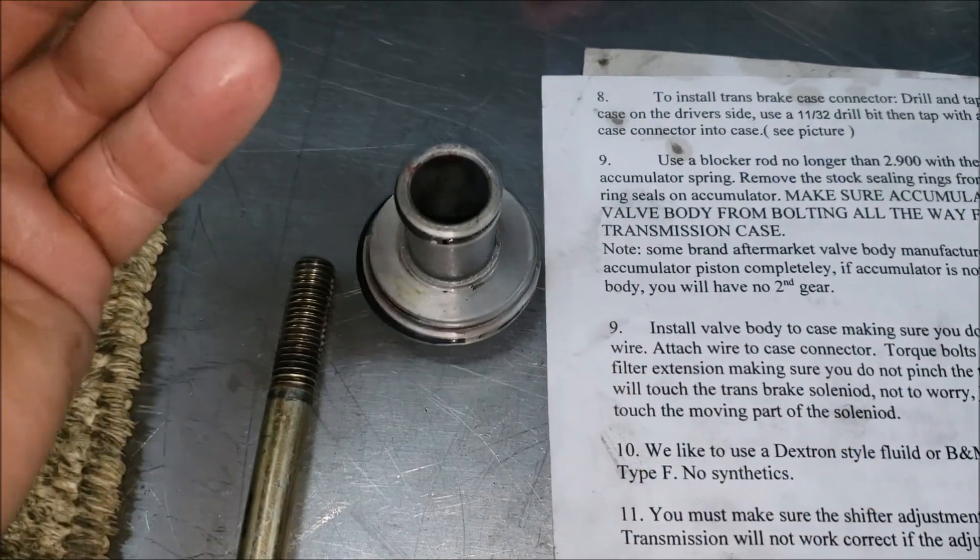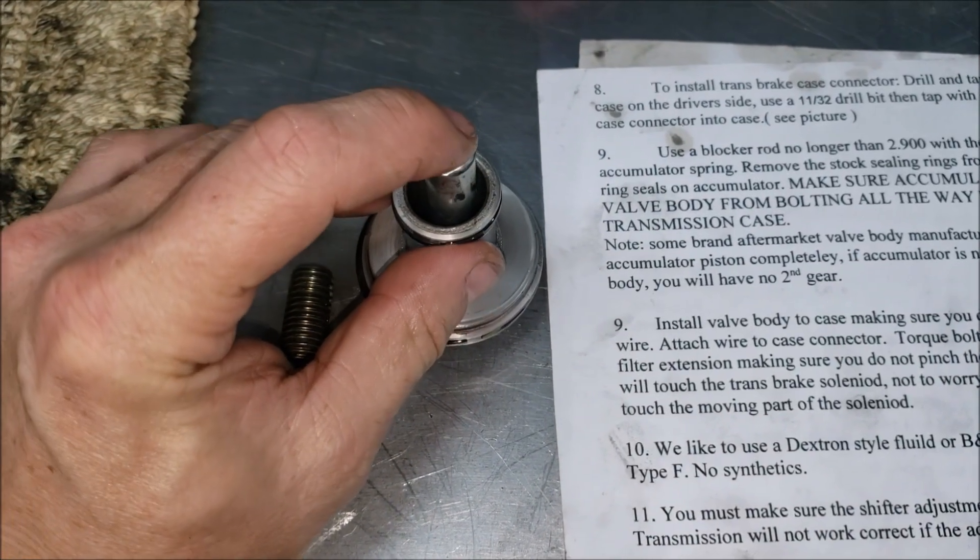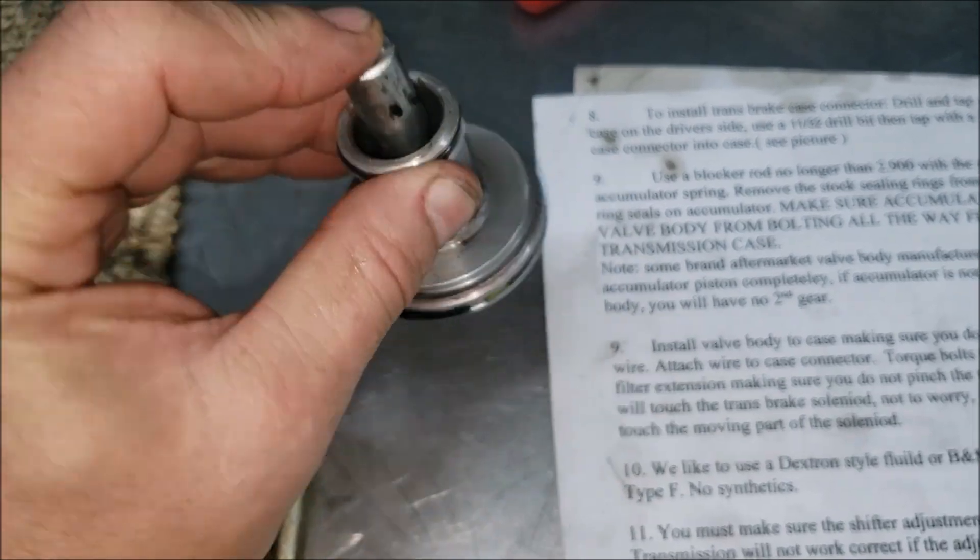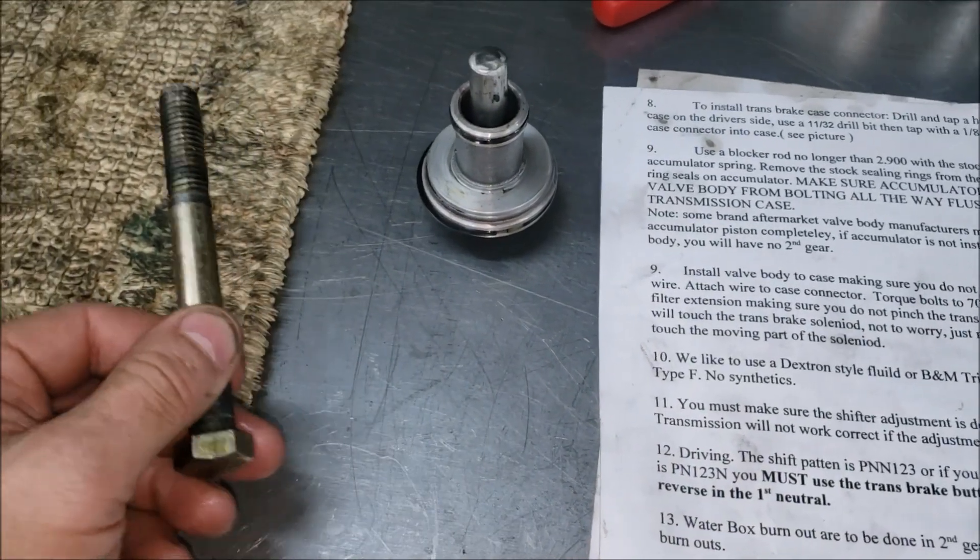So this is 2.9 inches long and that's gonna sit right here inside of my accumulator and I put the big end in there. I put a little dab of grease on there, just a little Vaseline, and that way when you put it in there it doesn't block off anything. Perfect. You can do this, you don't need anything special.